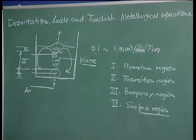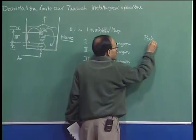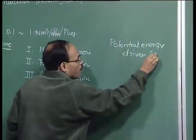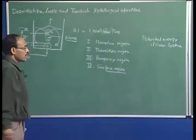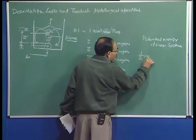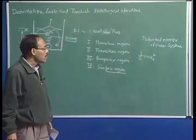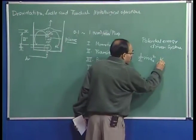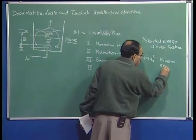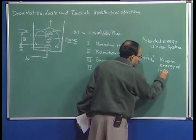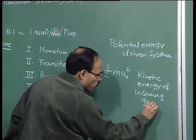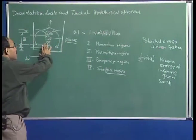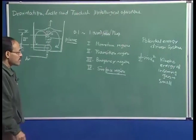The system is typically driven by potential energy and not kinetic energy as one would normally anticipate — it is a potential energy driven system. The kinetic energy of the injected gas, which is half m-dot times u-zero squared, where m-dot represents the mass flow rate and u-zero represents the velocity through the orifice, is extremely small — barely 1 to 2 percent of the potential energy. That is why we say it is a buoyancy driven flow in a gas-stirred ladle system.